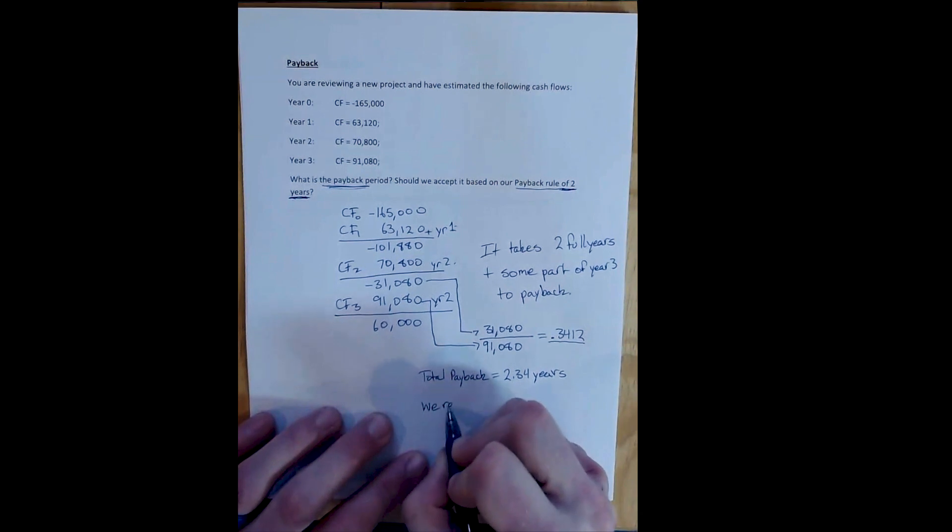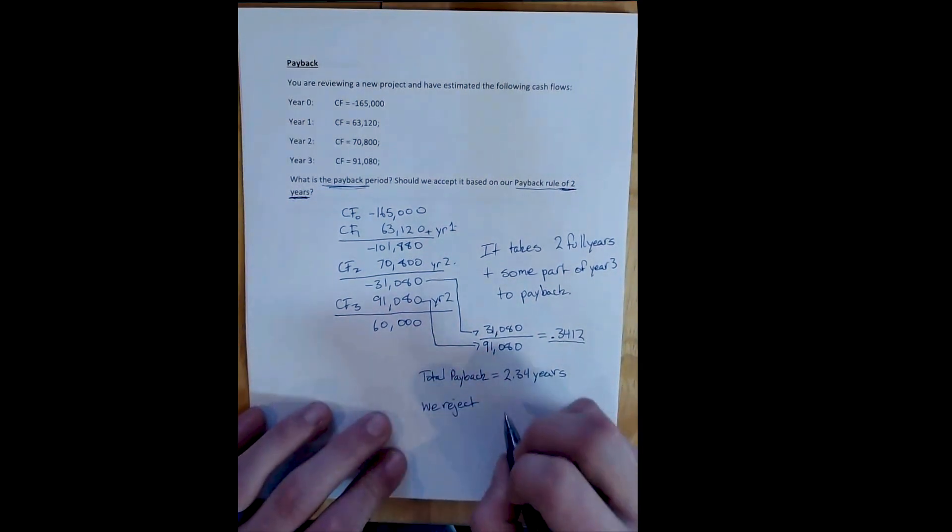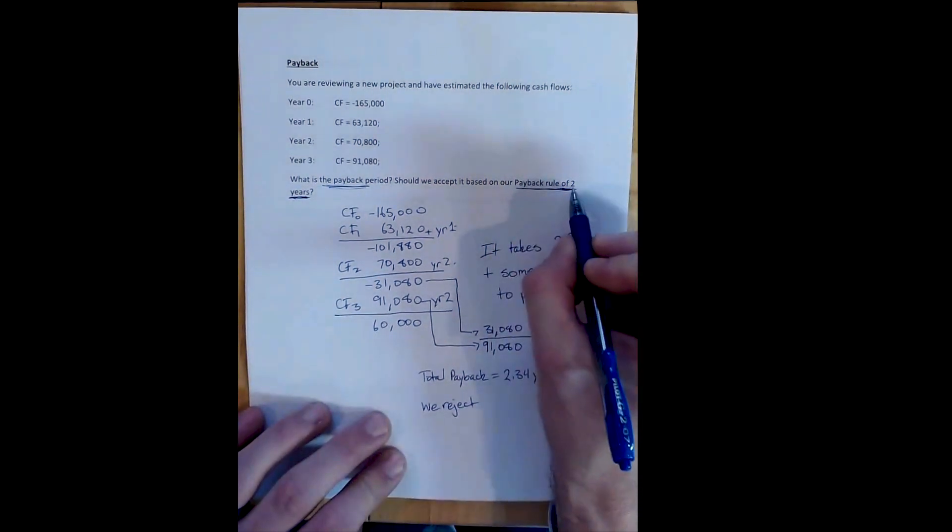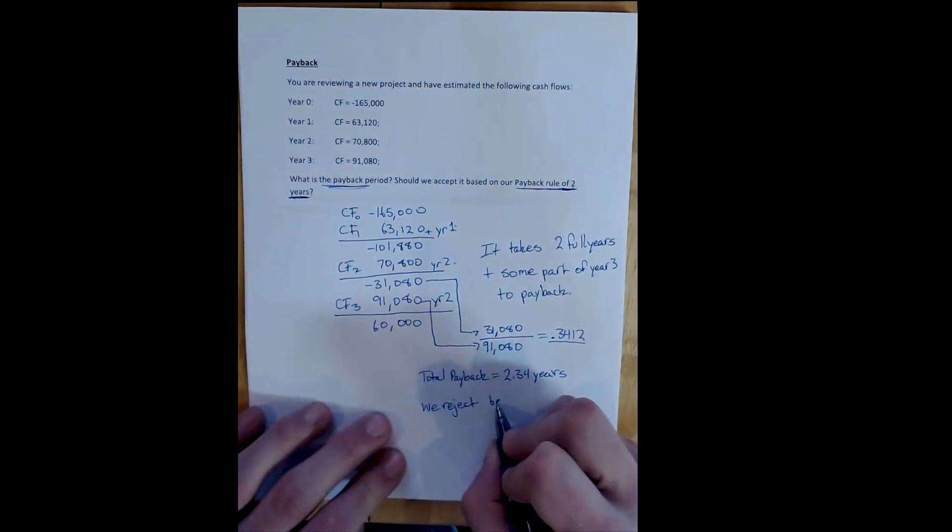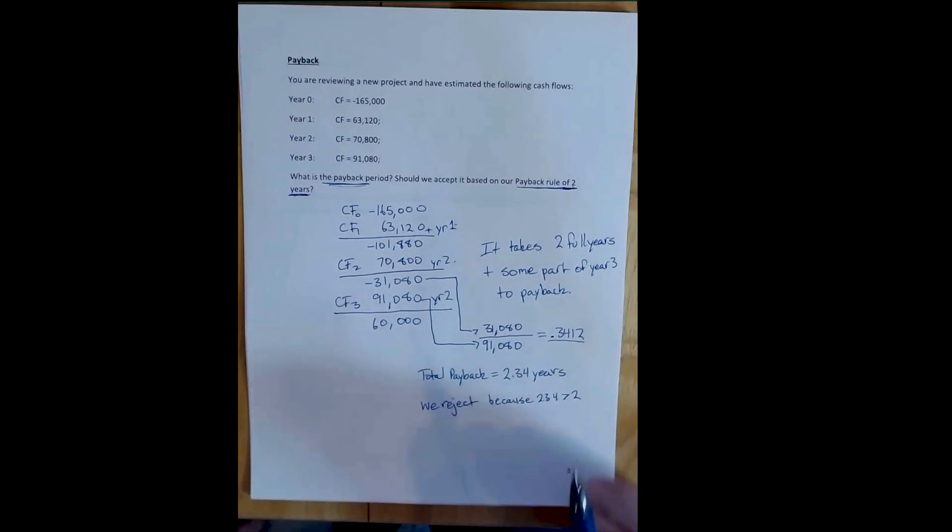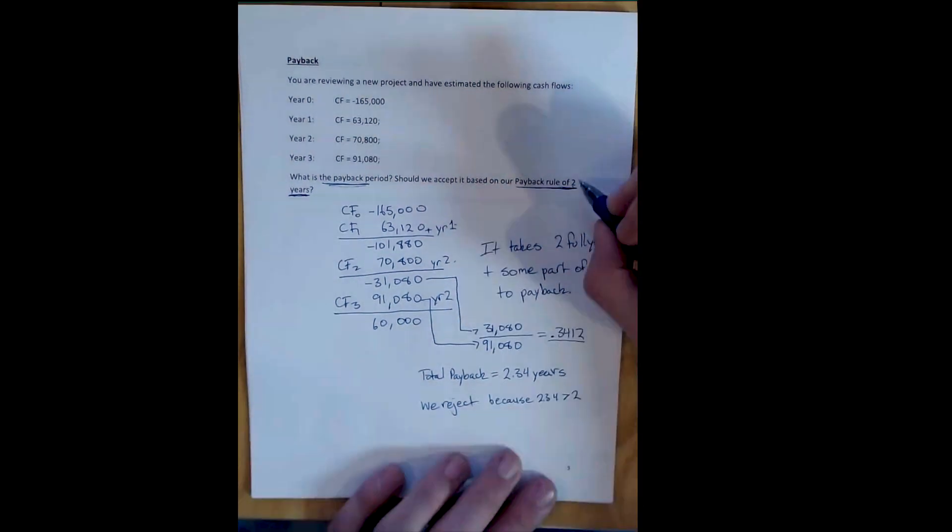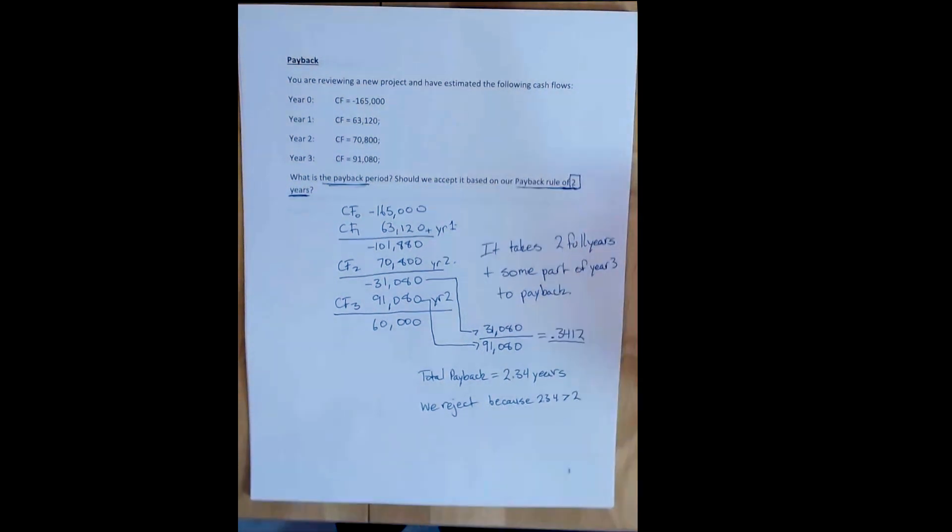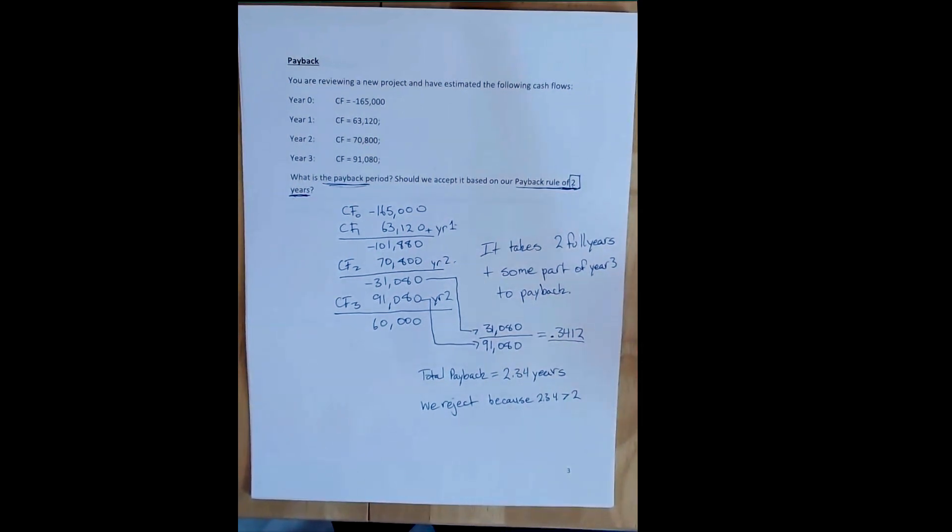Part two says we reject because the payback rule says take any project that pays back under our limit, and we reject because 2.34 is greater than two. This example is specifically chosen - I chose two years particularly so that we would reject a project that we already knew from the NPV problem was a good one. This project we know has a positive NPV, and because the NPV is the golden rule, we know that this is a good project. The payback rule and its arbitrary cutoff date means that we often are going to reject good projects in favor of bad ones, and this is a known problem.